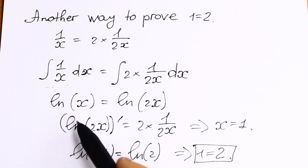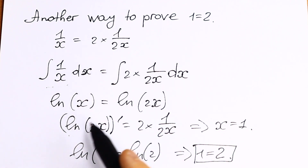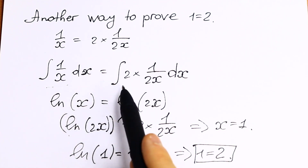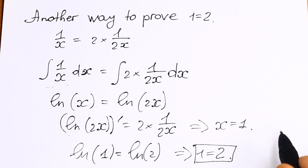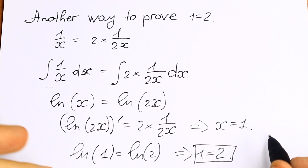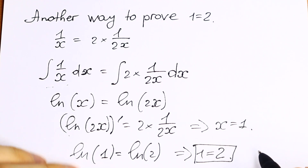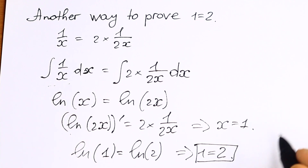Another method showing 1 equals 2. Where is the mistake? Where is the trick in this explanation? It will be really interesting to read your thoughts, so write your suggestion or question in a comment. Thank you so much for watching and see you in the next videos.